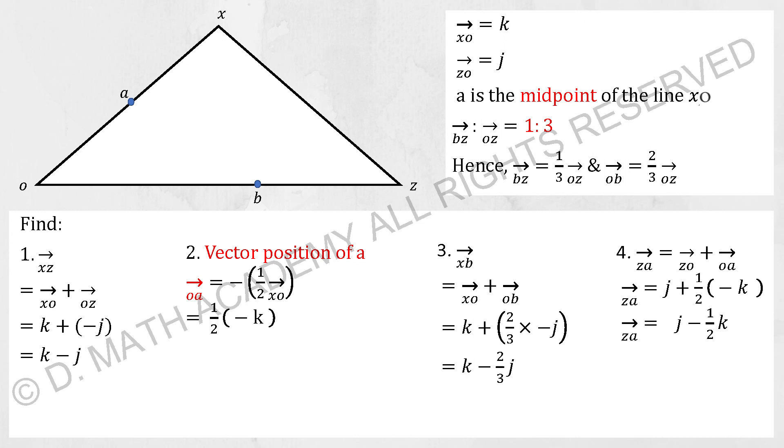For the next one, we have finding the ZA. So ZA will be evolving around ZO plus OA. It will be J plus half bracket negative K. So your final answer, J minus 1 over 2 K.